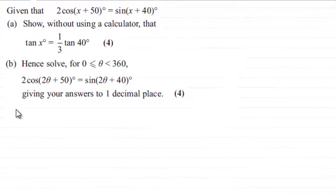Hi there. Now before we start part B, just to remind you that if you looked at the first video where we discussed part A, we were given that 2 cosine of x plus 50 degrees equals sine of x plus 40 degrees, and we had to show, without using a calculator, that tan x degrees equals a third of tan 40 degrees.